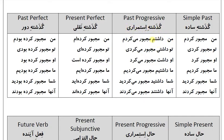گذشته استمراری (Past Progressive): من داشتم مجبور میکردم، تو داشتی مجبور میکردی، او داشت مجبور میکرد، ما داشتیم مجبور میکردیم، شما داشتید مجبور میکردید، آنها داشتند مجبور میکردند.